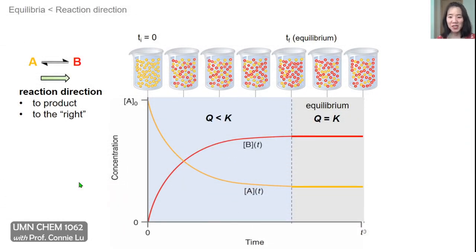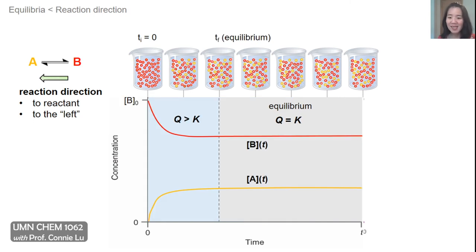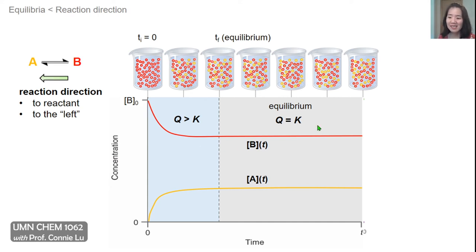Consider a reaction where A turns into B and we start with 100% A. The reaction direction is towards B, the product, or to the right. This is a situation where Q is less than K, so Q continues to increase until we reach equilibrium where Q and K have equal values. In a related example, we start with all B and again reach equilibrium. Because we have more product than reactant compared to the equilibrium concentrations, Q is larger than K at time zero. Q decreases by converting product to reactant until Q and K have exactly the same values.